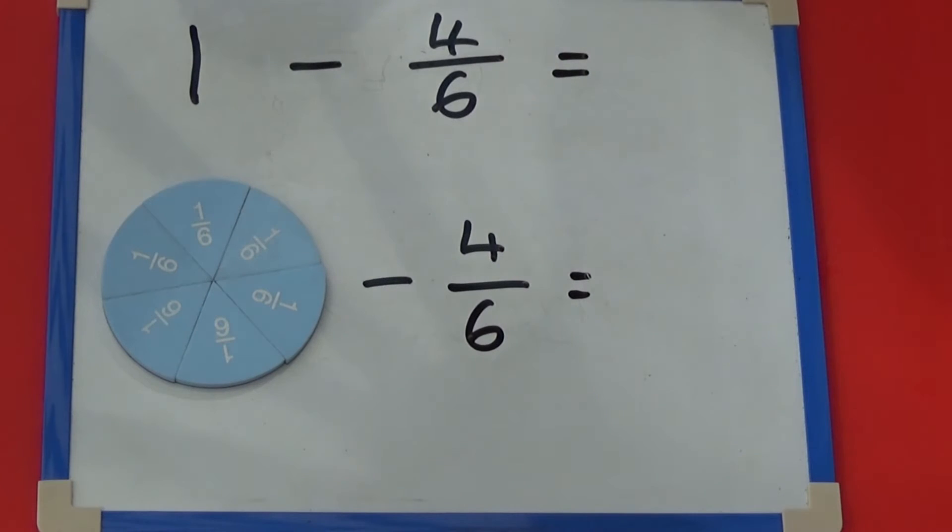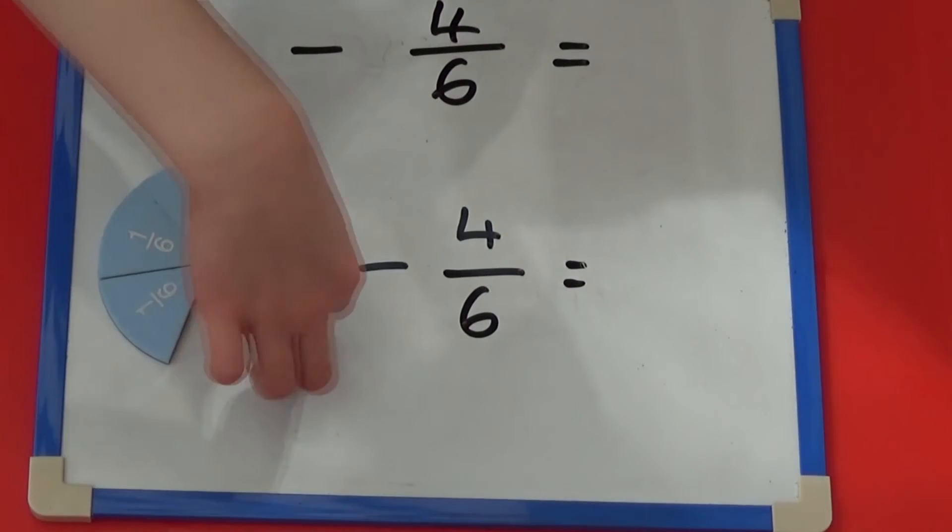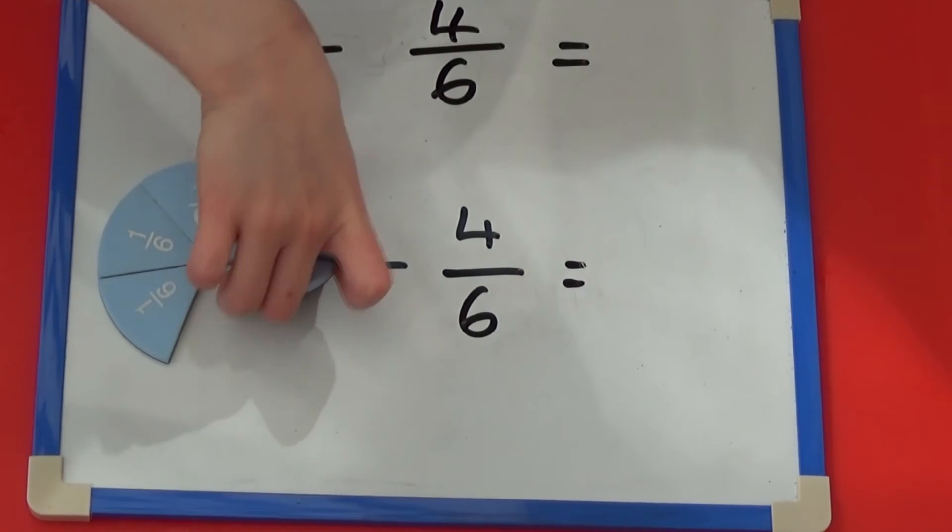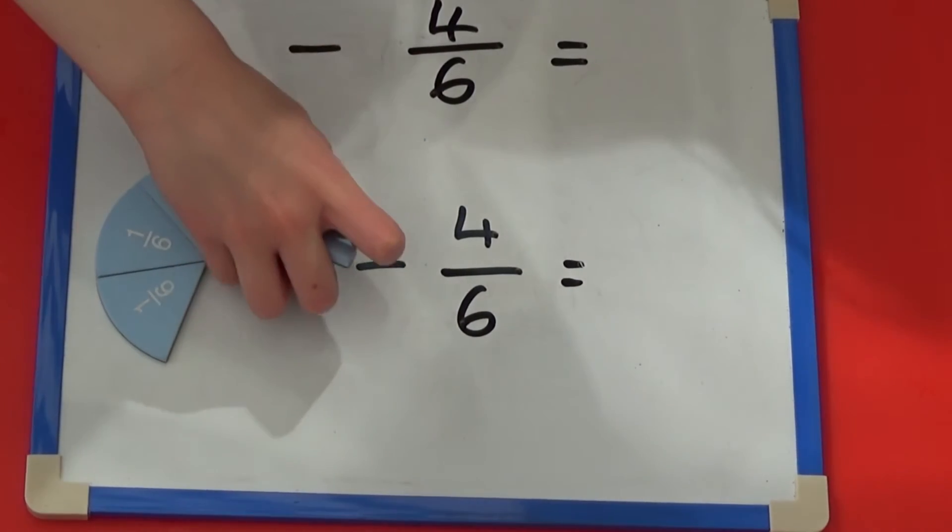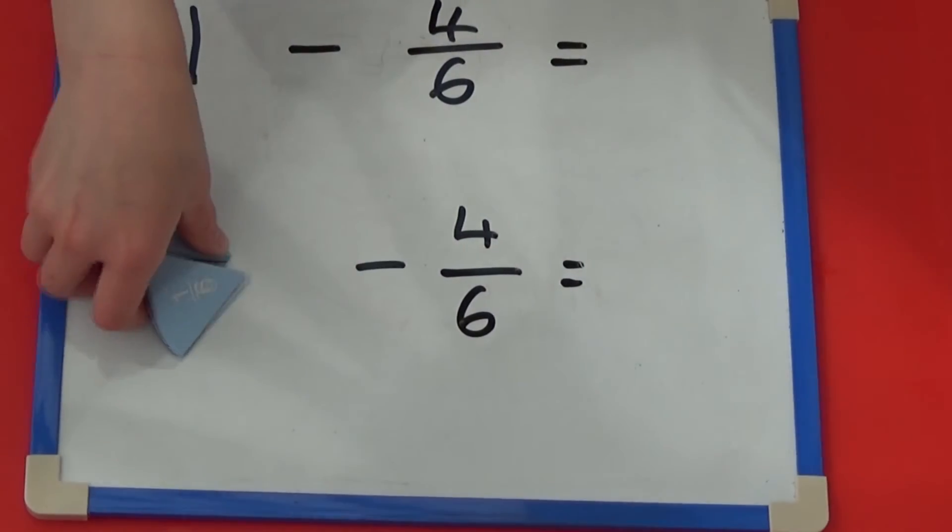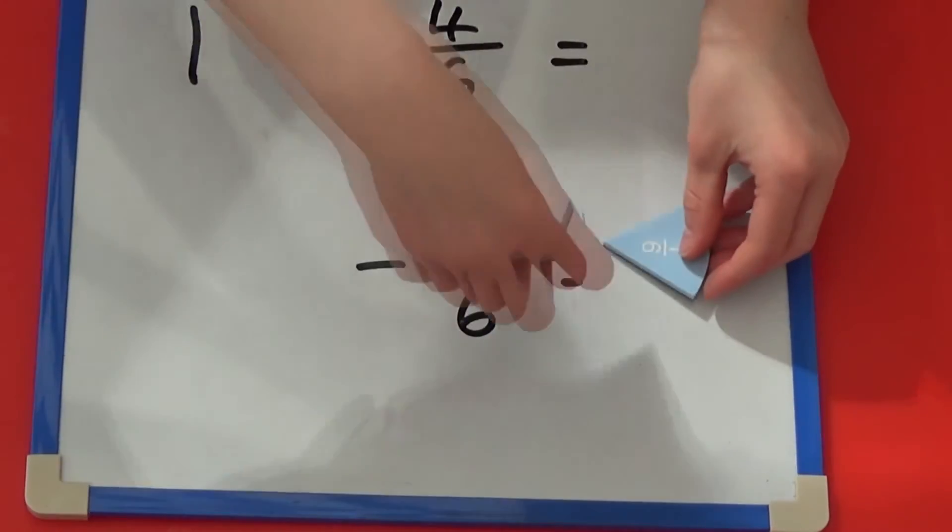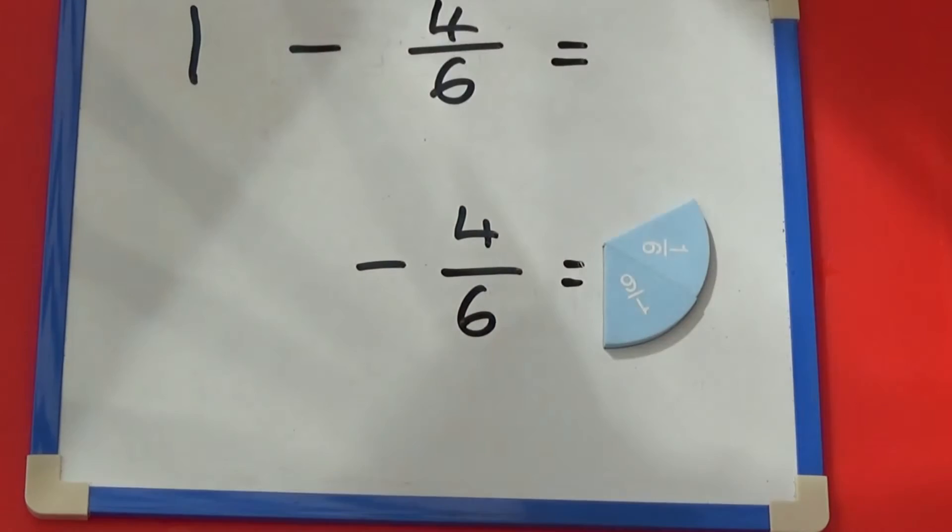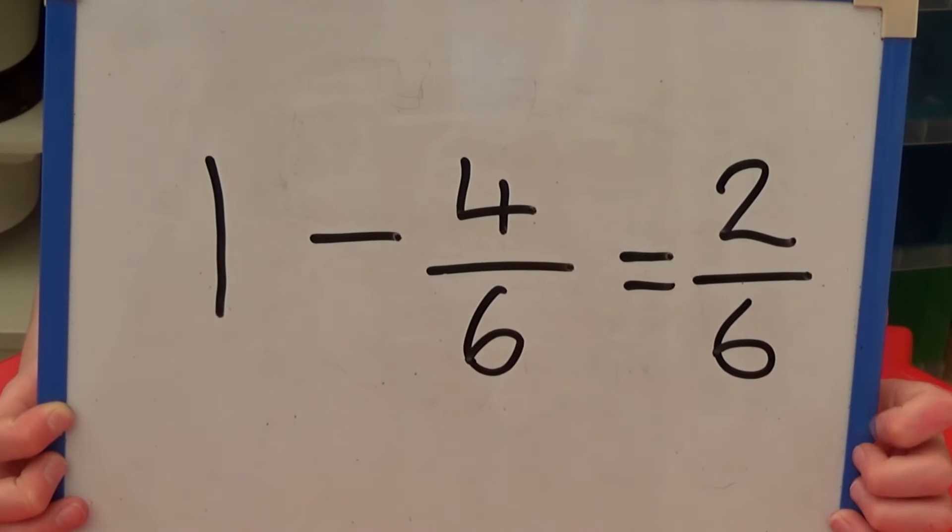As we are taking away four sixths, I'm going to take away four of the sixths. So we are left with two sixths. So one whole take away four sixths equals two sixths.